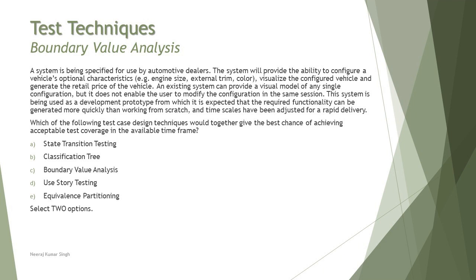Now here in this scenario, all we need to target is the very first line where they have given you what are the characteristics of the engine or vehicles. When you have engine size, external trim color, you know that there will be different classes, different options for each class, like what are the different sizes, what are the different trim options, and what are the different colors.